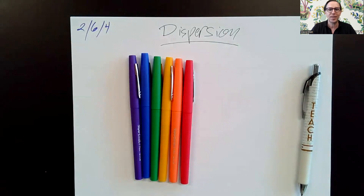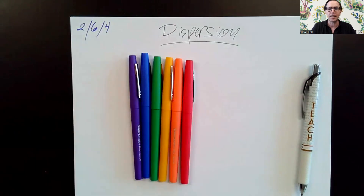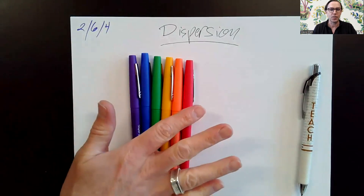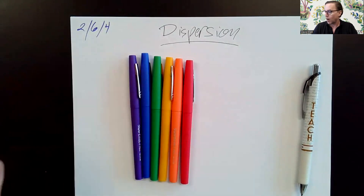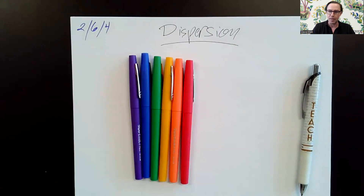We are continuing to study light. And why do we have rainbow colored pens? Well, colors are pretty. But these rainbow colored pens in order — red, orange, yellow, green, blue, purple — are related to today's topic, which is called dispersion.